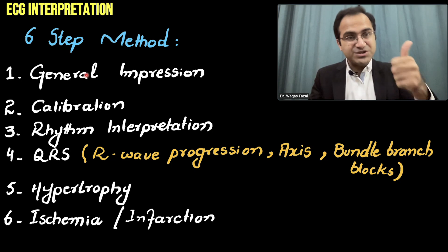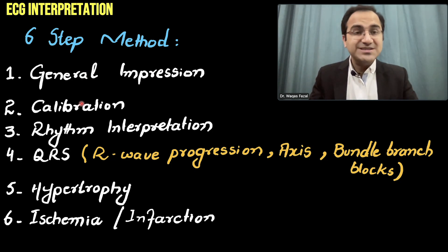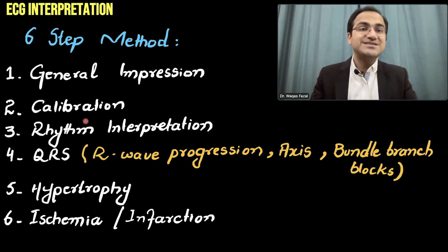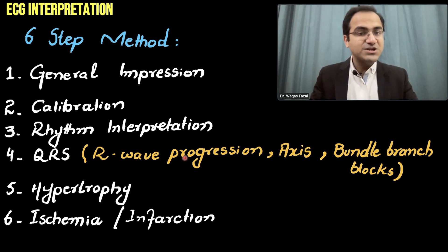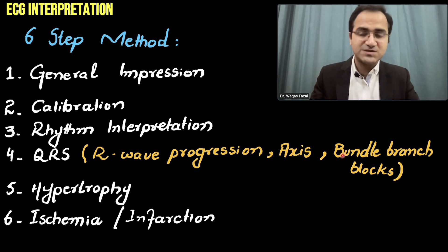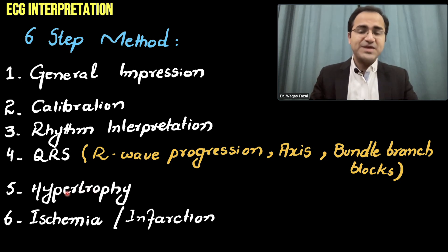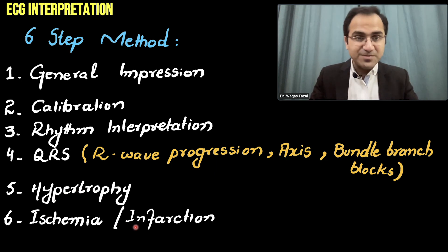The 6 steps of ECG interpretation include: the 1st step where you see the general impression; the 2nd step where you look at the calibration of ECG; the 3rd step where you go for rhythm interpretation; the 4th step where you assess the QRS complex, looking for R wave progression, axis deviations, and bundle branch and fascicular blocks; the 5th step where you look for hypertrophies; and the 6th step where you look for ischemia and infarction.